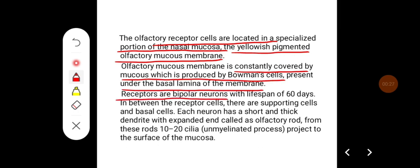Receptors are bipolar neurons with lifespan of 60 days. In between the receptor cells, there are supporting cells and basal cells. Each neuron has a short and thick dendrite with the expanded end called as olfactory rod.